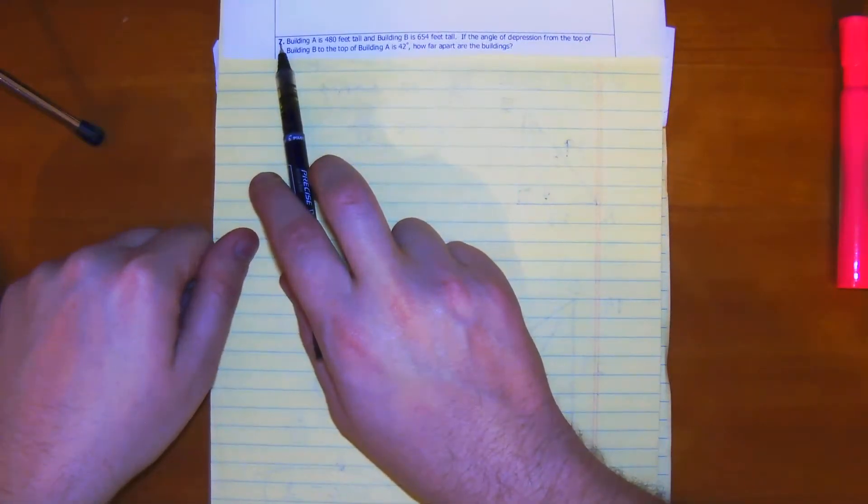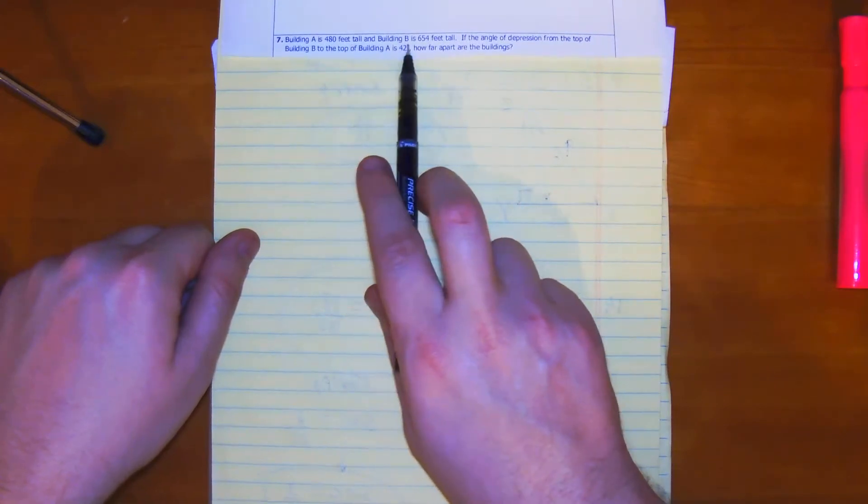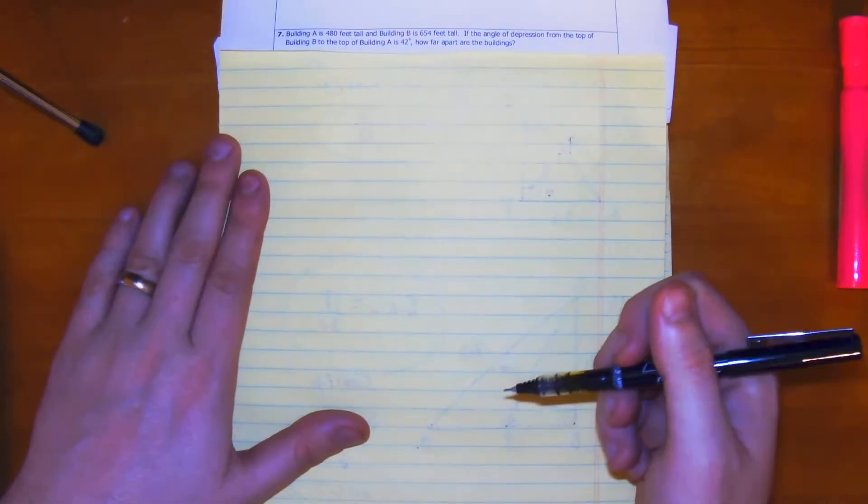We're looking at number seven. Number seven says building A is 480 feet and building B is 654 feet. So let's just draw that real quick.